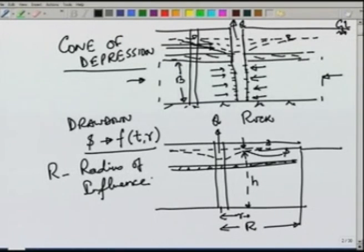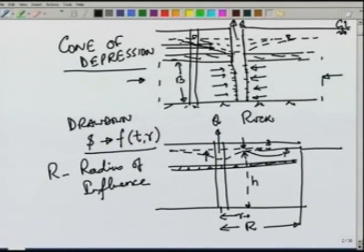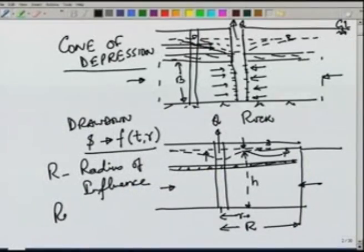Once it reaches steady state, the profile s will only be a function of r. If we go very far from the well, we will reach a point beyond which the drawdown is zero. This distance is called the radius of influence — the distance up to which the well is influencing the water level. If we stop pumping, the cone of depression will slowly rise back, because water is still coming in and the piezometric head rises. This phenomenon is known as recovery.